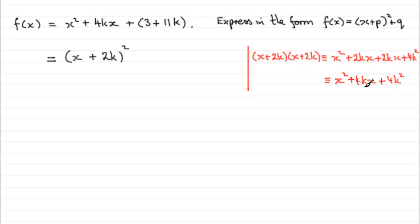So you can see, hopefully, that what we've got here is the first two terms, x squared plus 4kx, but unfortunately, we've collected an additional 4k squared.